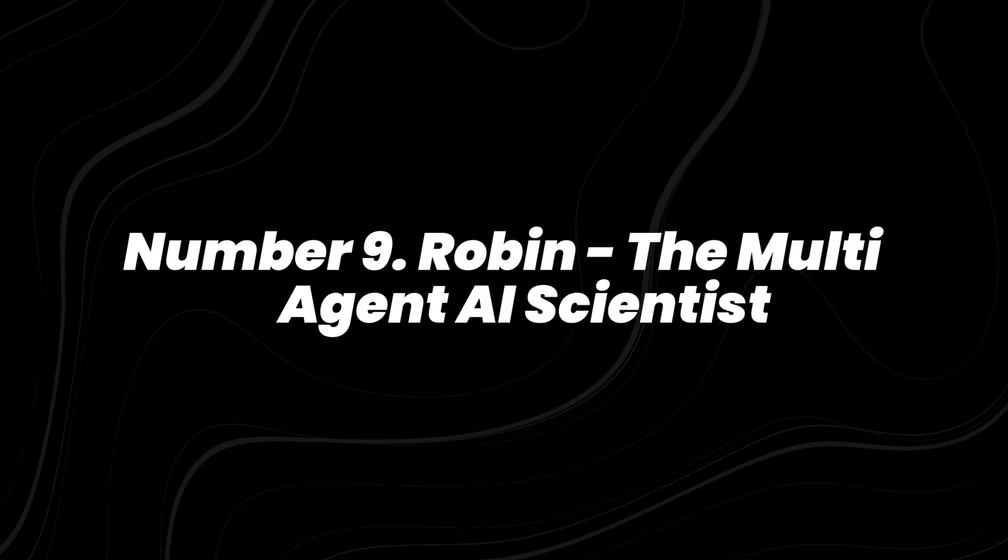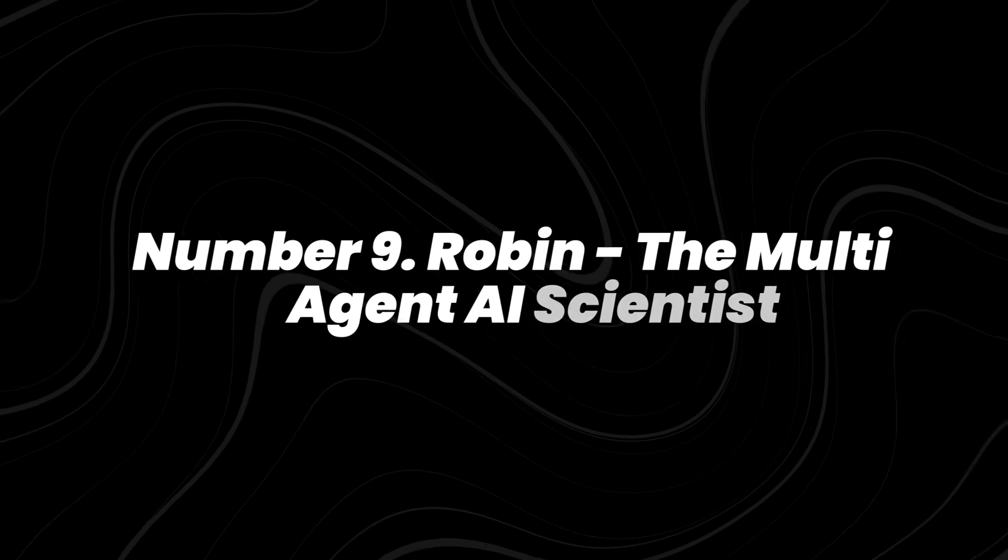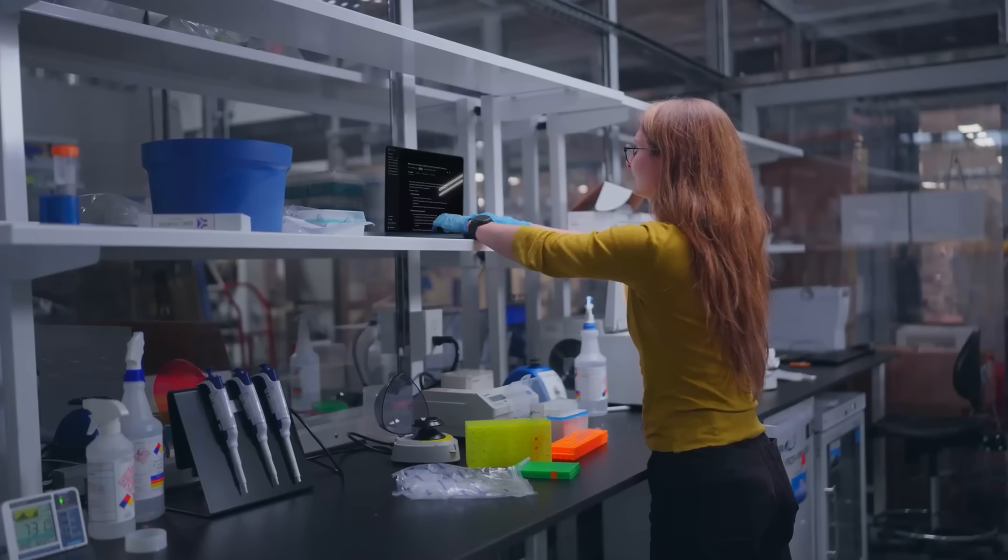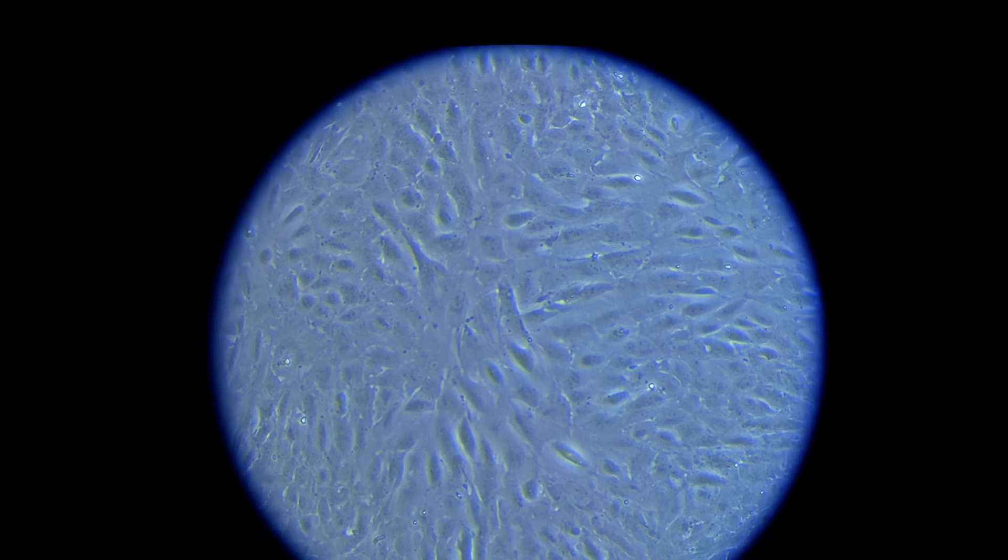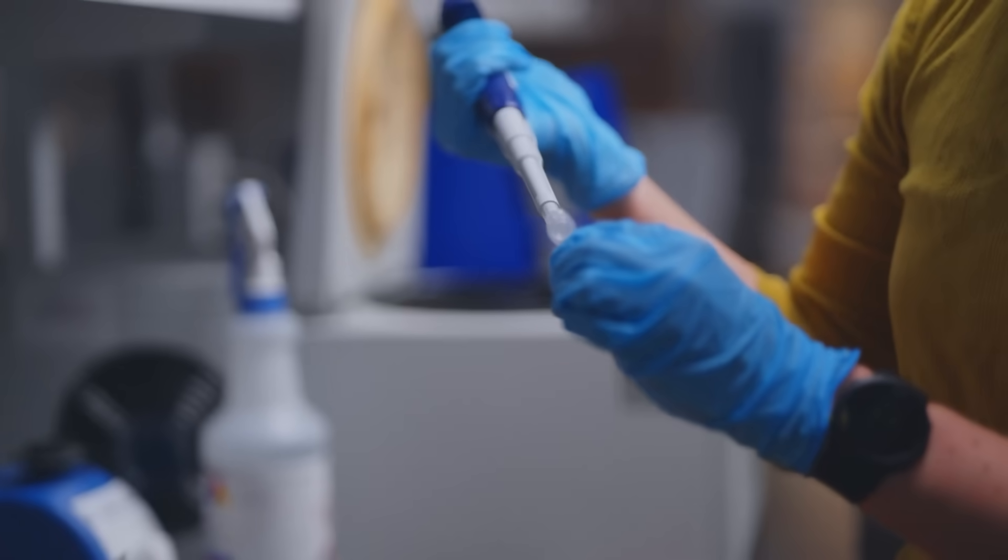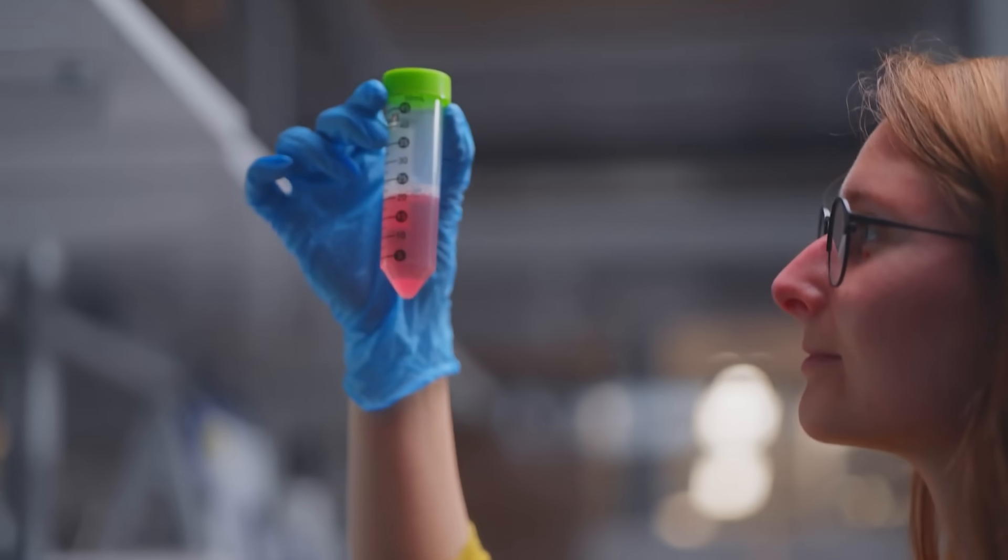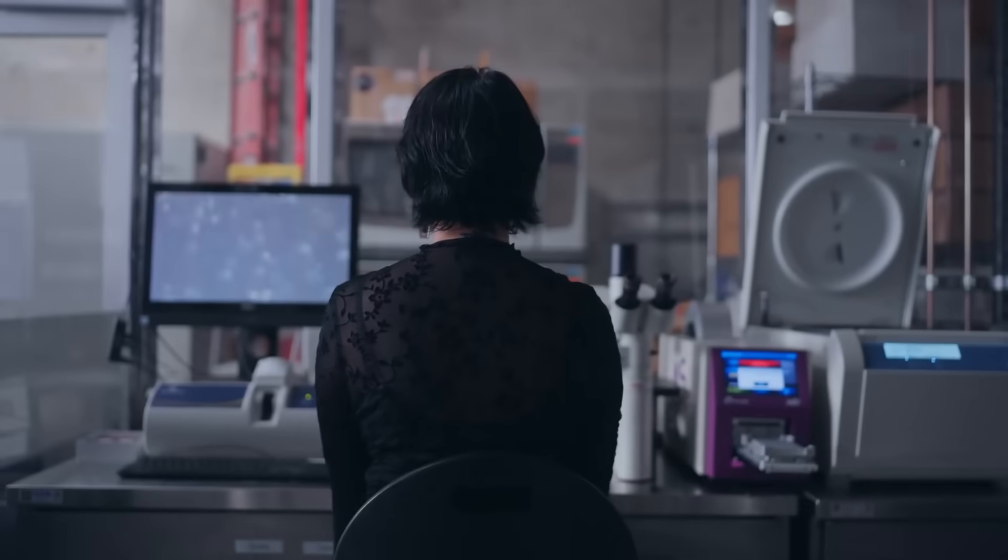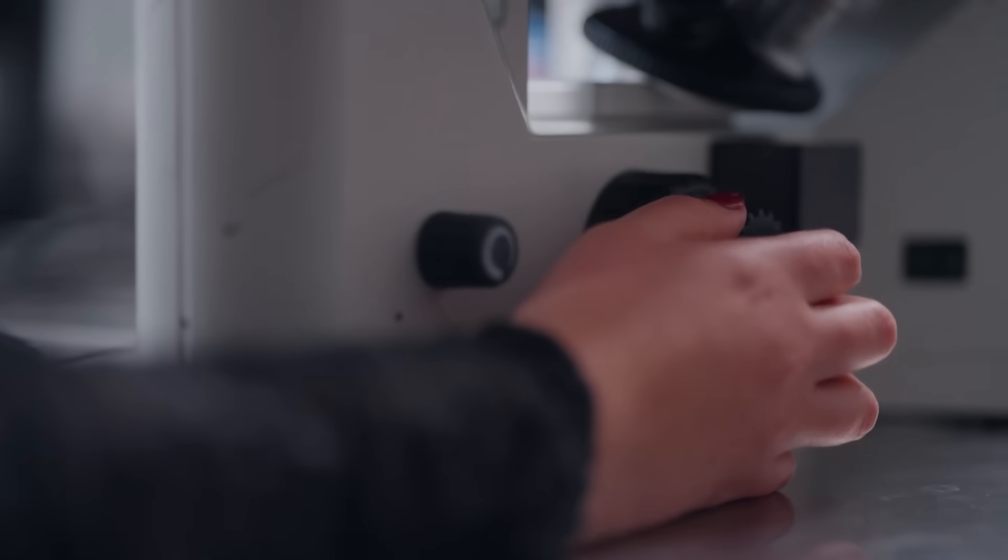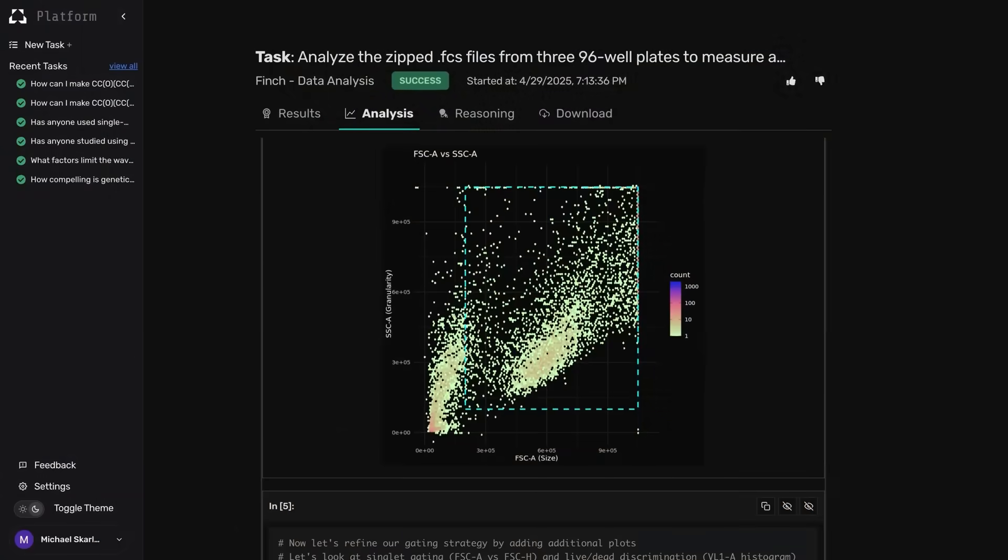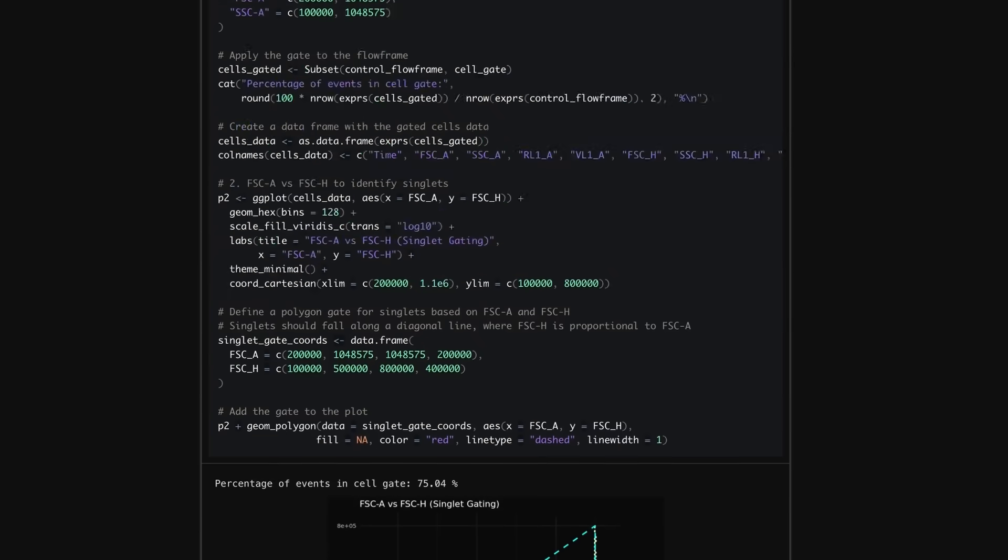Number 9, Robin, the Multi-Agent AI Scientist. A team of researchers in 2025 created Robin, a multi-agent AI framework that can perform the entire scientific process autonomously. Robin can generate hypotheses, design experiments, run simulations, analyze data, and even draft research papers.